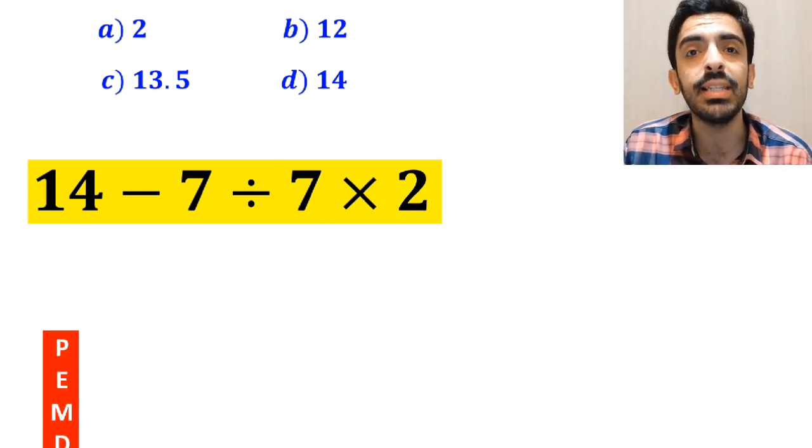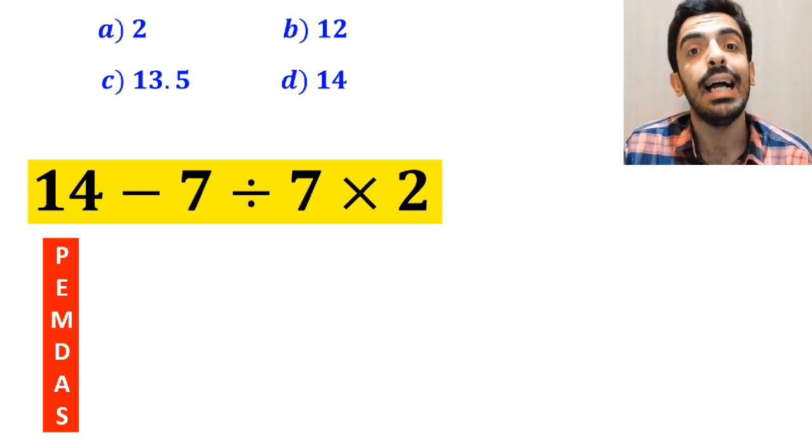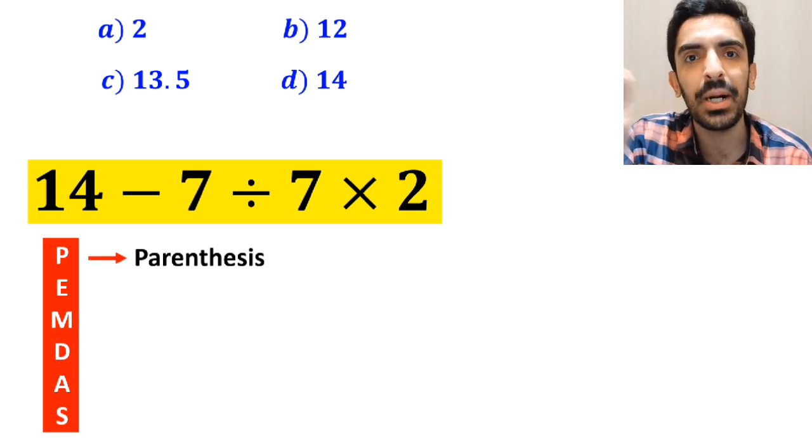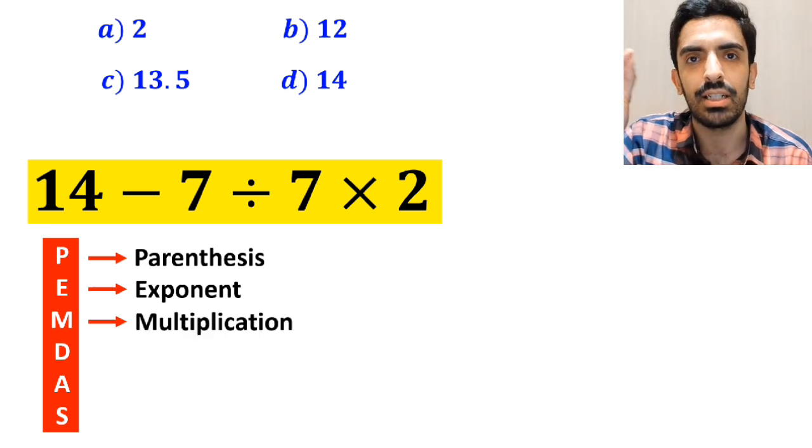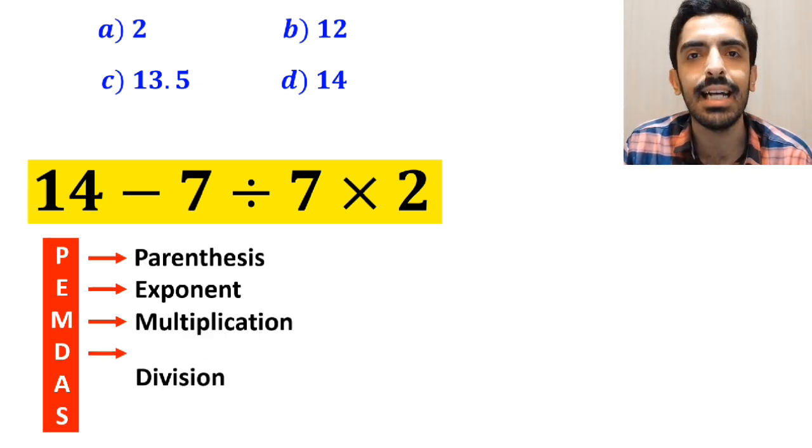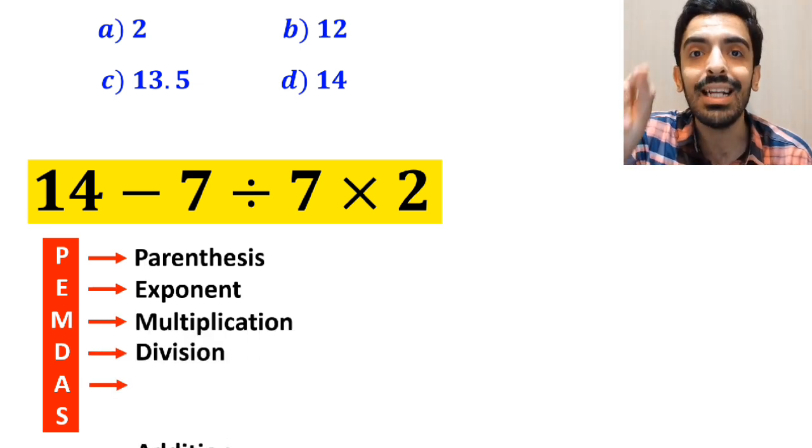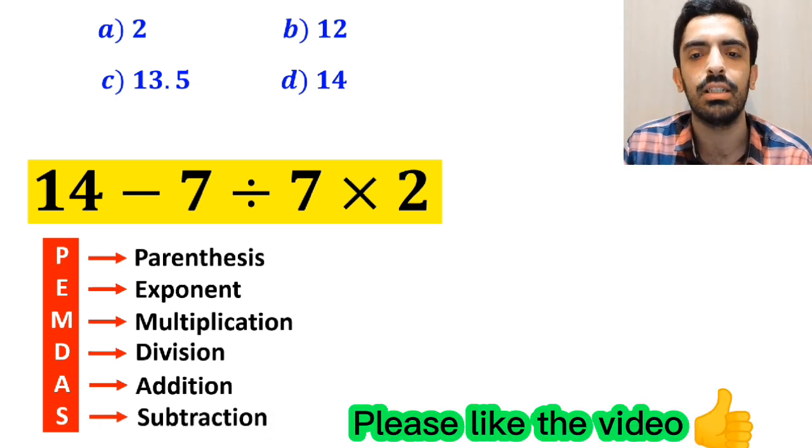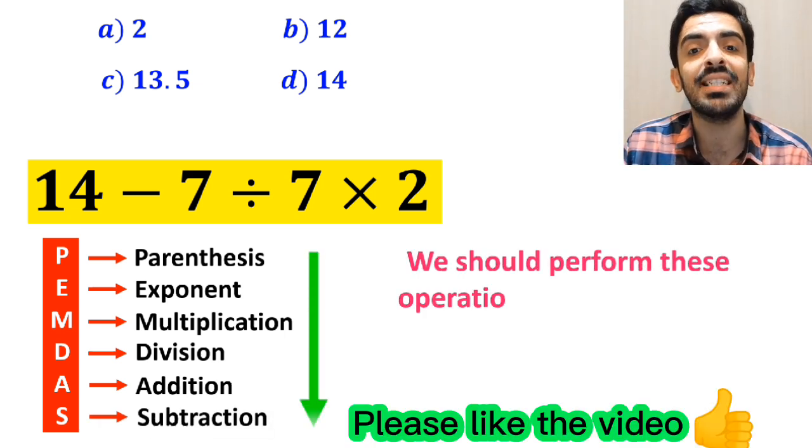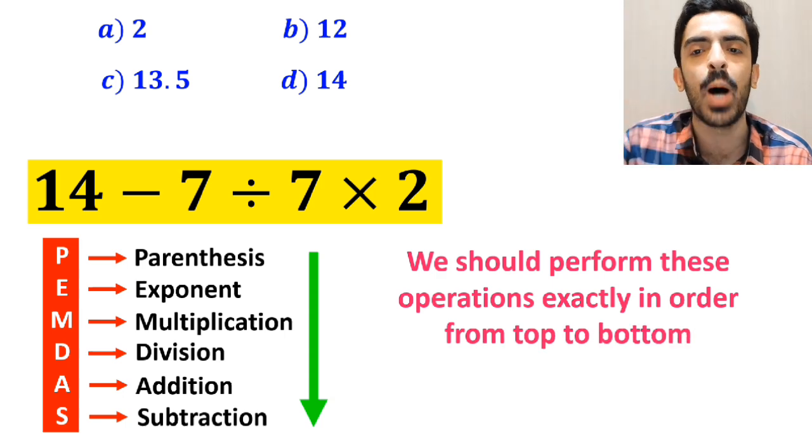To solve this problem, we must follow a rule called PEMDAS. P stands for parentheses, E stands for exponent, M stands for multiplication, D stands for division, A stands for addition, and S stands for subtraction. We should perform these operations exactly in order from top to bottom.